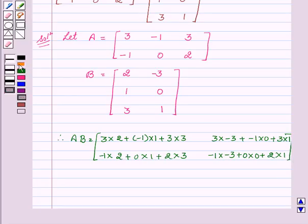This is equal to 6 minus 1 plus 9, minus 9 plus 0 plus 3, minus 2 plus 0 plus 6, 3 plus 0 plus 2.